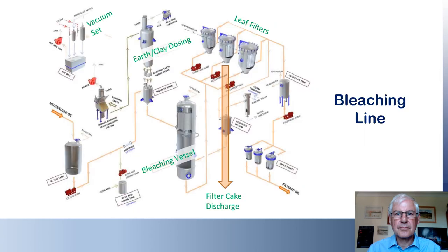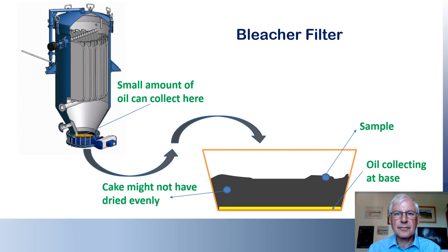In bleaching, oil is mixed with powdered clay — often called bleaching earth — to remove colour and other impurities. The clay is then separated from the oil in a filter. When the filter is full, the oil is blown out of the vessel and steam passes through the cake to dry it, removing as much residual oil as possible before it is dropped into a container. Sampling the filter cake is not always easy, and you have to make sure the next batch isn't about to fall on your head. The cake may not have dried evenly, so a single sample may not be fully representative. The best approach is to take several samples from different parts of the container, including some from as far below the surface as you can get, and then combine them.